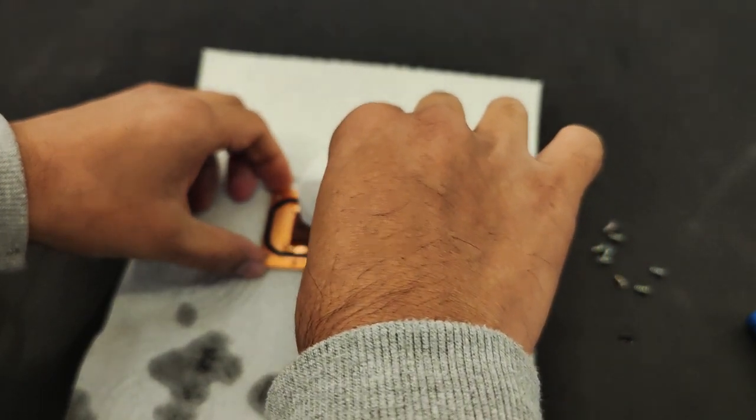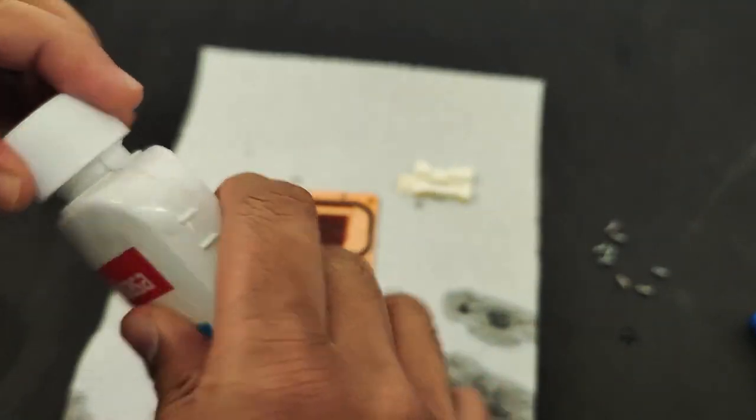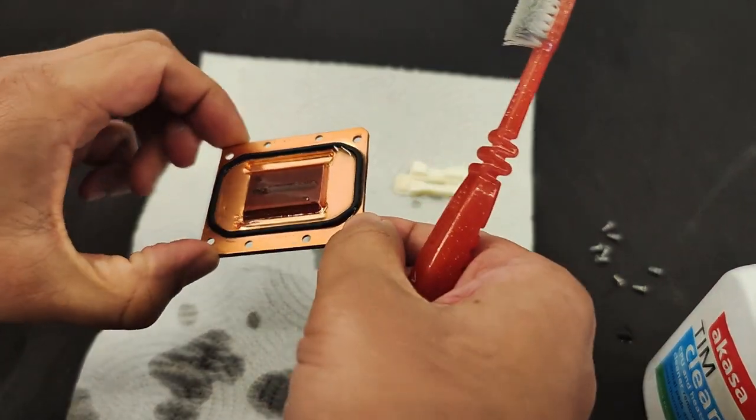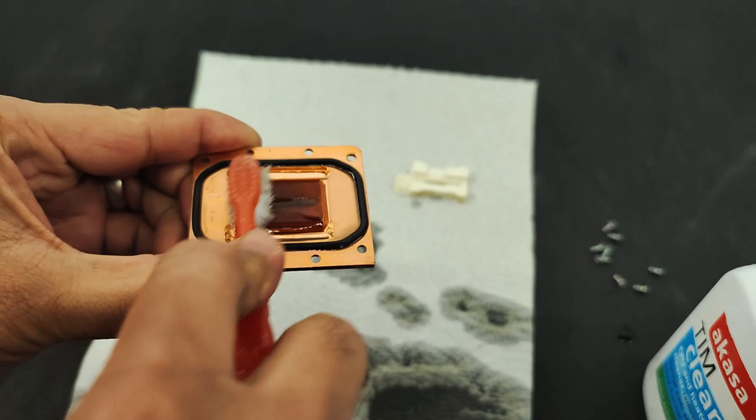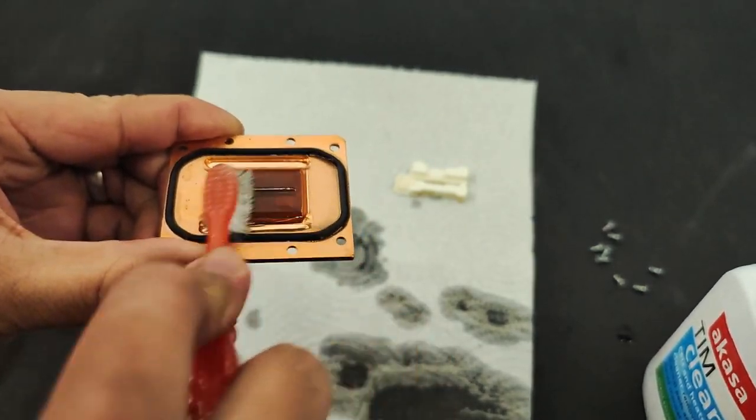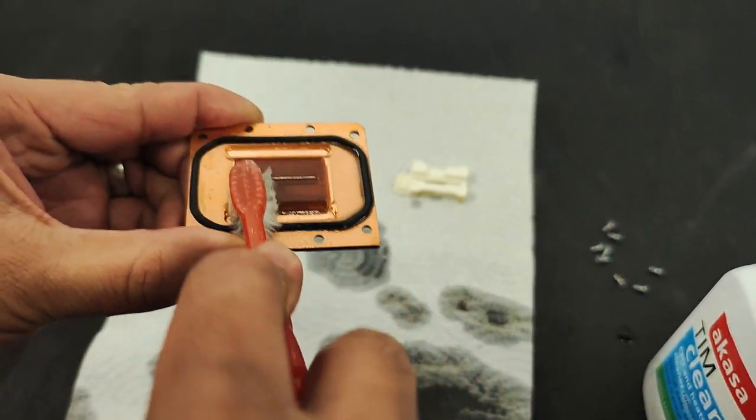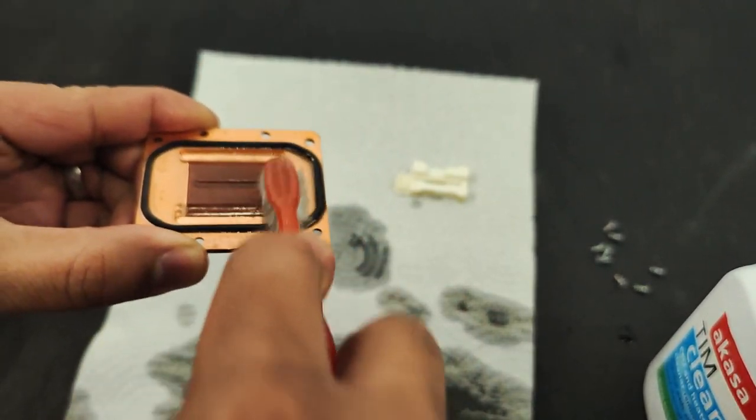The next thing is you want to use acetone on the plate, and that's the back side of the plate, and just give it a general clean. You can just use an old toothbrush just to brush off the old fins and make sure there's no ingress or dirt in there. It will give you better cooling performance if you do that job.